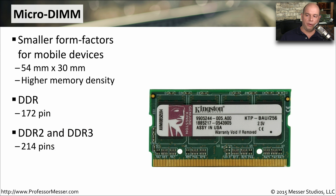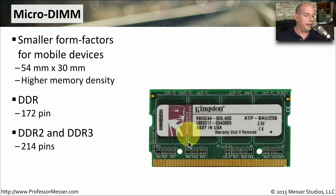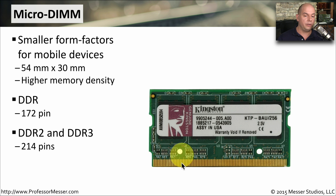A bit smaller than the SODIMM is the MicroDIMM, designed for even smaller mobile devices — about 54 millimeters in width. Amazingly, we can fit even more memory onto these smaller devices. If this is DDR memory, it's a 172-pin module. For DDR2 or DDR3 memory, there are 214 pins connecting to the memory interface.